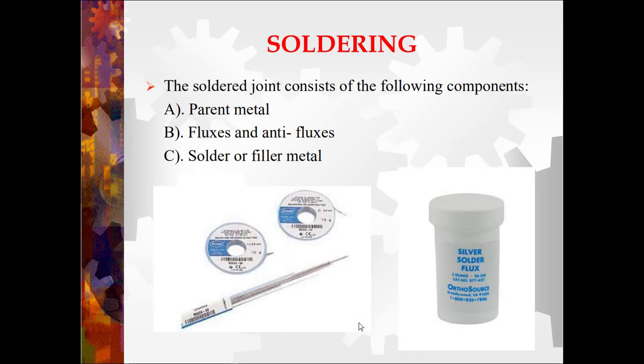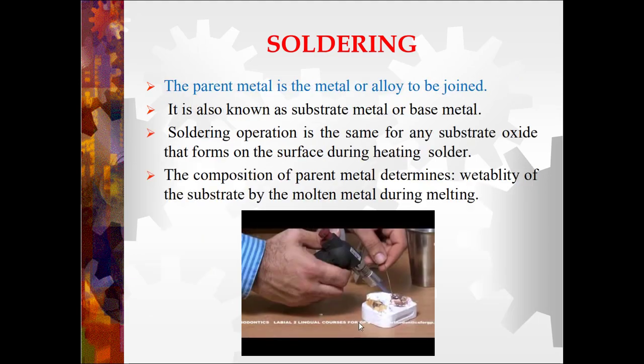The soldered joint consists of the following components: first is the parent metal — the metal or alloy to be joined; second, fluxes and anti-fluxes; and third, solder or the filler metal. The parent metal is also known as substrate metal or base metal. During the soldering operation, an oxide layer is formed on the surface of the metal during heating, which doesn't allow the two pieces to join. The composition of parent metal determines the wettability of the substrate by the molten metal during melting.